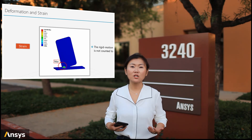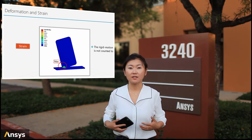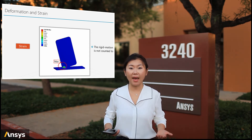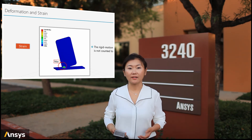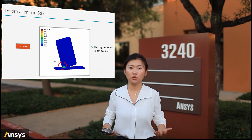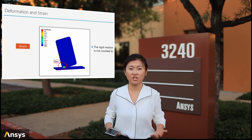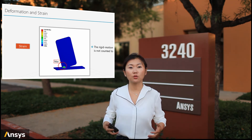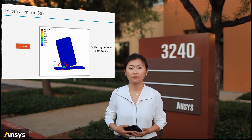Based on our engineering judgment, we expected the corner impact should be more critical. Clearly, the strain contour provides a more informative presentation of the deformation, drawing our attention to the corner with large distortion. That's why strain is needed.